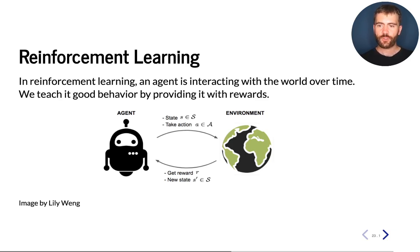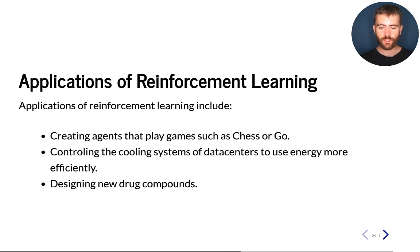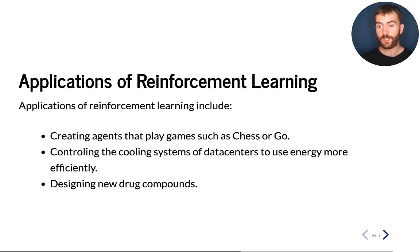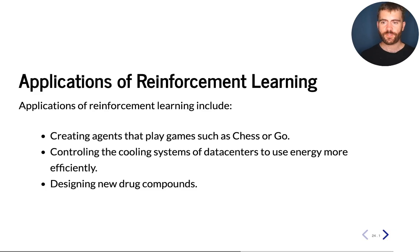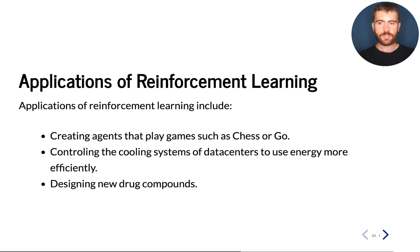This approach also has a lot of practical applications. For example, agents that play board games like chess or Go — state-of-the-art agents are built using reinforcement learning. Reinforcement learning also has practical applications in industry; for example, cooling systems for data centers, where we can use reinforcement learning to design policies for when to turn on or off cooling to keep the data center at optimal performance without incurring too much cost.